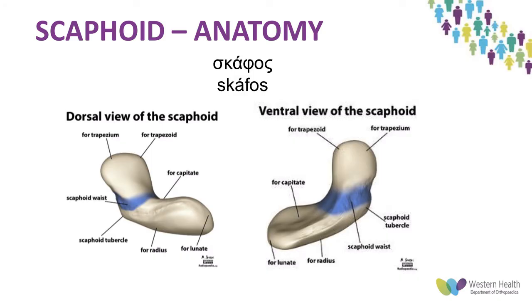Starting with a little bit of history: the scaphoid is named after 'scaphos', the Greek word for boat, because the bone was thought to resemble a boat. It's a highly articular bone with about 75% of its surface area covered by articular cartilage, forming four carpal joints as well as an articulation with the proximal radius. The scaphoid tubercle is palpable over the palmar surface and provides attachment for some ligaments.